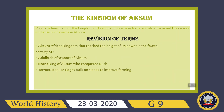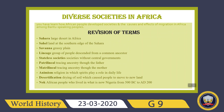The next chapter is African Civilizations. We read about the Kingdom of Aksum and its role in trade, and discussed causes and effects of events in Aksum. Aksum is an African kingdom that reached the height of its power in the fourth century. Adulis was the chief seaport of Aksum. Ezana is the name of a king of Aksum who conquered Kush. Terraces are step-like ridges built on slopes to improve farming.